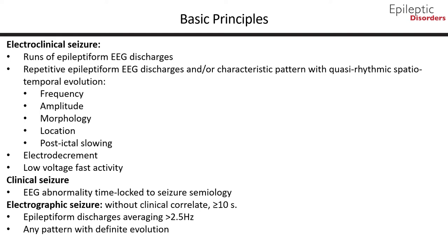Another important seizure type to recognize is clinical seizures, which may have a paroxysmal event with no EEG-ictal correlation. These are specifically important with focal seizures, where there may not be an ictal EEG correlate.